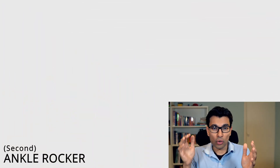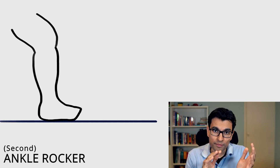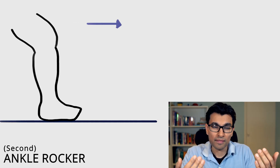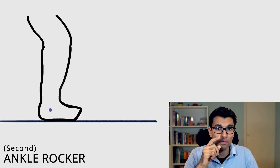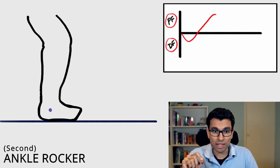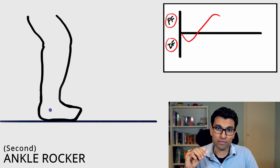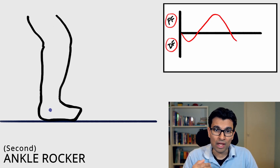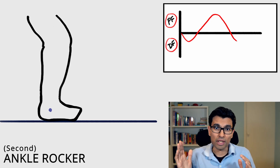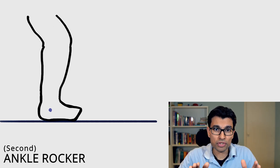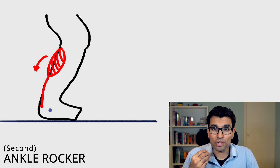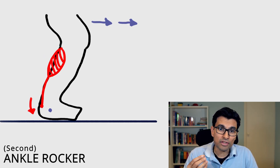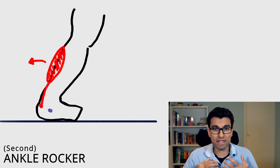The next rocker is the ankle rocker. After the foot has gone all the way down, the body needs to move forward — the torso moves forward and the foot stays planted. During this time the ankle has to dorsiflexion to accommodate that forward movement. But you don't want unopposed dorsiflexion, as the whole body would just lurch forward. Something must control that movement: the soleus muscle, again through an eccentric contraction — the muscle gets longer as it contracts to control the movement.